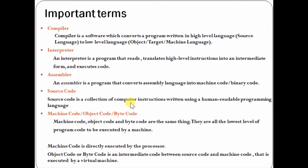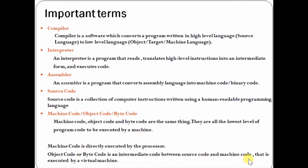The instructions in source code are human readable. In machine code or object code, only the system will execute these codes. Machine code indicates code that will be executed by the CPU. Object code or byte code is the intermediate code between the source code and the machine code.